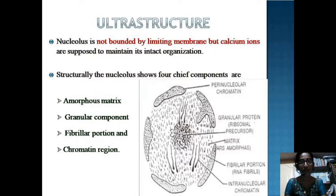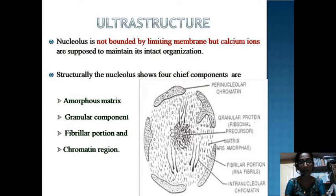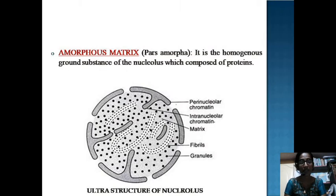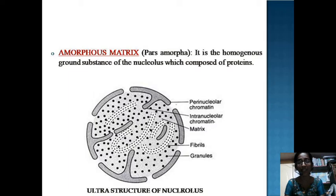Coming to the ultrastructure of the Nucleolus: the Nucleolus is not bounded by a limiting membrane. Instead, there is a presence of calcium ions, whose main function is to maintain its intact organization. Structurally, there are four important components in the Nucleolus: the amorphous matrix, granular component, fibrillar portion, and chromatin region. The amorphous matrix, also known as pars amorpha, is a homogeneous ground substance composed of proteins and enzymes required for RNA synthesis — including RNA splicing enzymes called spliceosomes. Along with that, there are two other structural components, fibrils and granules, which are immersed in the amorphous matrix.